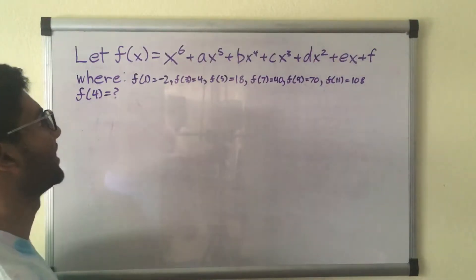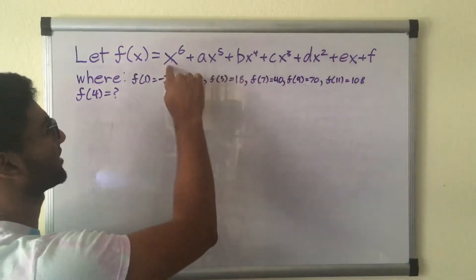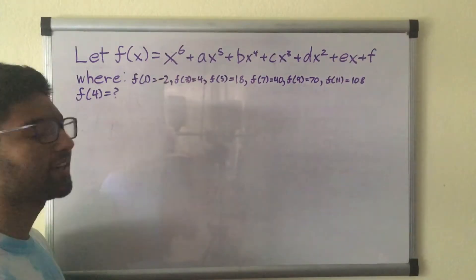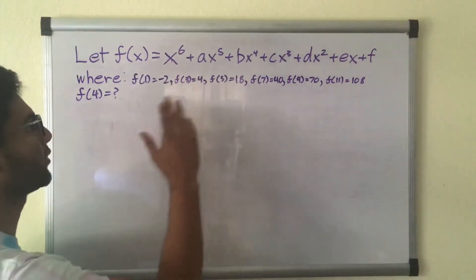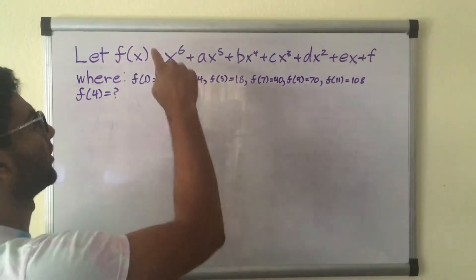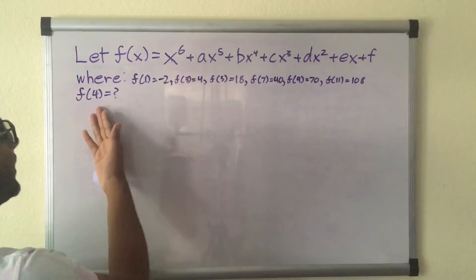Hey guys, so we have a 6th degree polynomial from x to the 6th all the way to f. We have 6 initial values, so theoretically we could make a system of 6 equations, 6 variables, work that out, and finally get our a through f, and then we can plug in our f of 4.